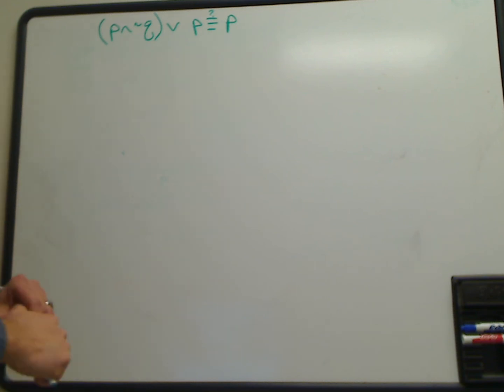In this video we're going to talk about how to show logical equivalence for propositional statements. Here's an example propositional statement: (P and not Q) or P, and we're trying to figure out whether that's logically equivalent to just P.